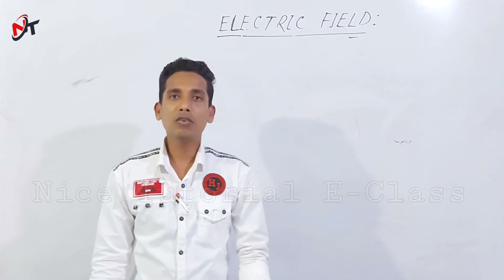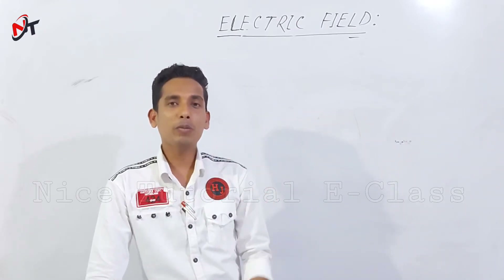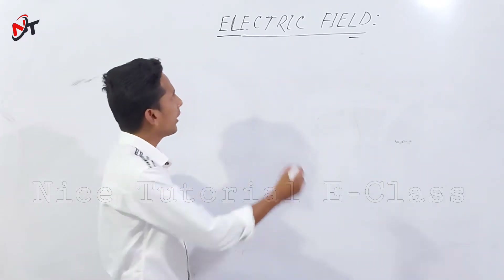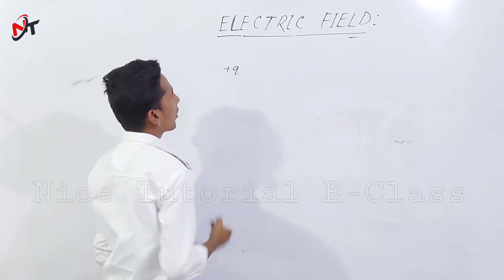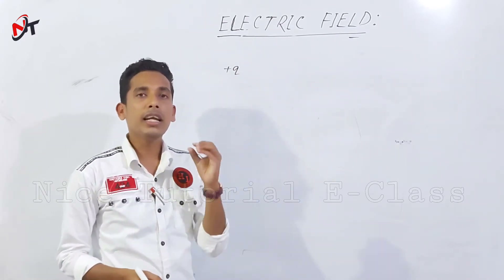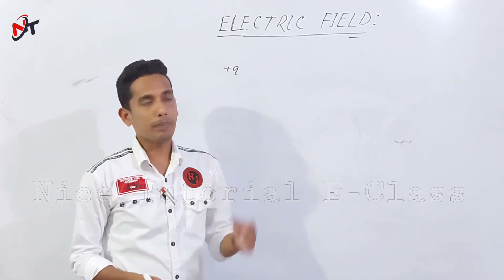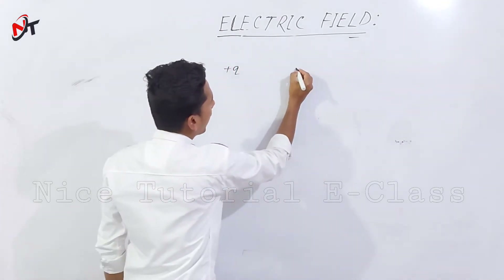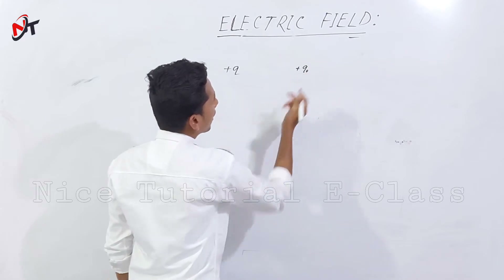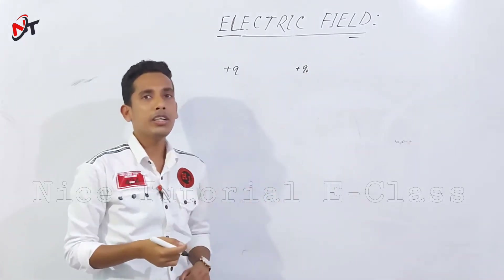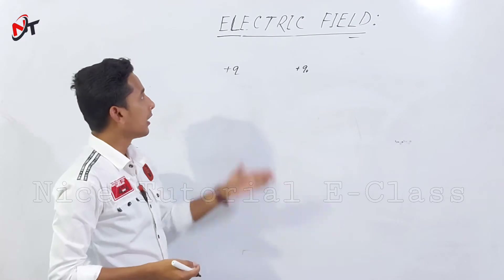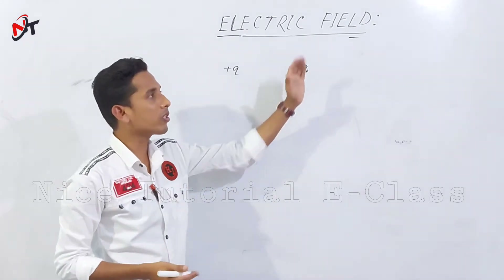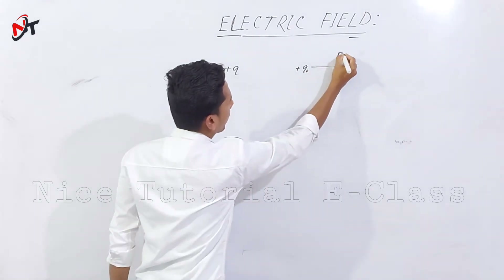Why did they create force and impact? It means that this electric field can create and produce. When the electric field is created, the test charge will experience a force. If the source charge is positive and the test charge is also positive, it will produce a radially outward force.